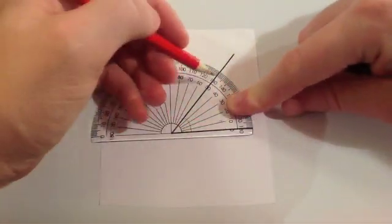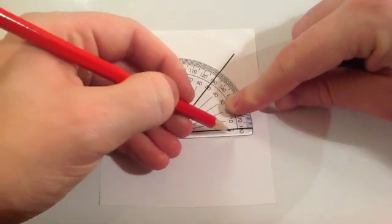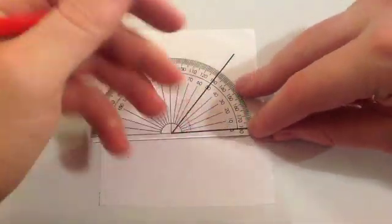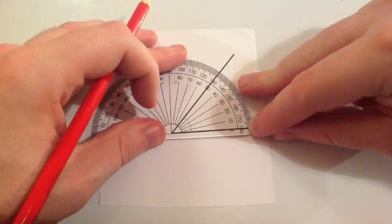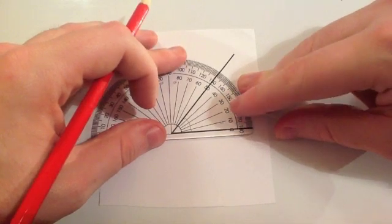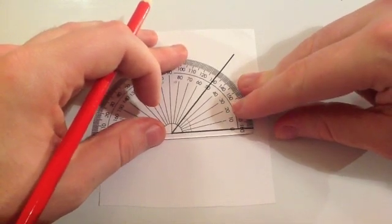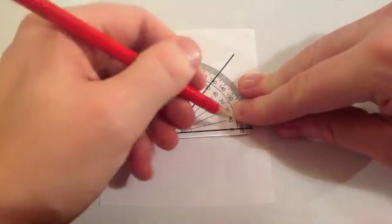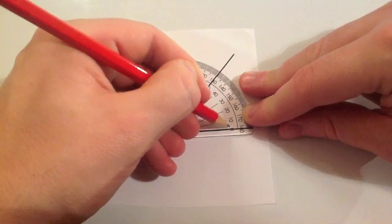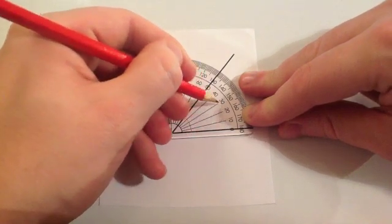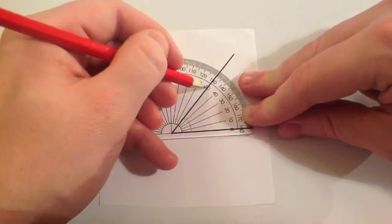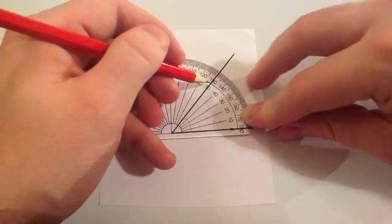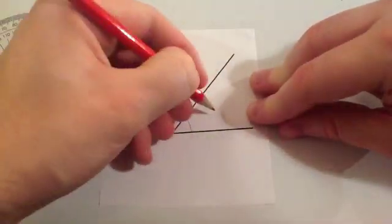If I measure this as you can see it goes round. The zero is here so you are going to go round: 10, 20, 30, 40, 50 degrees. So as you can see it is a 50 degree angle.